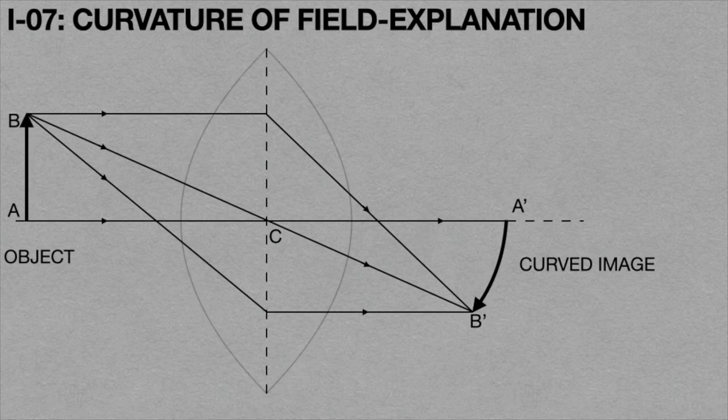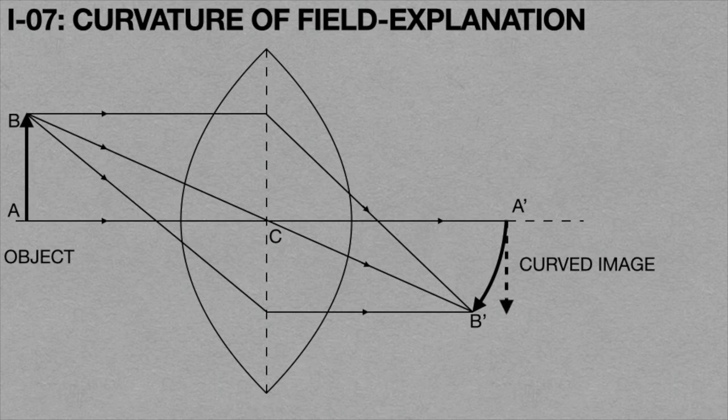If the curvature of the lens is small, then the image curvature also becomes less. But if the curvature of the lens is large, then the image curvature also becomes large.